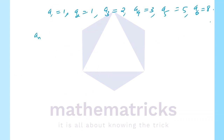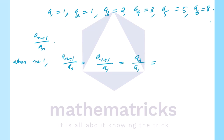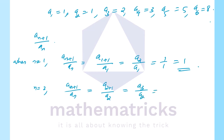For n equal to 1: a_{n+1} divided by a_n equals a2 divided by a1, that is 1 divided by 1, equal to 1. For n equal to 2: a_{n+1} divided by a_n equals a3 divided by a2, that is 2 divided by 1, equal to 2.